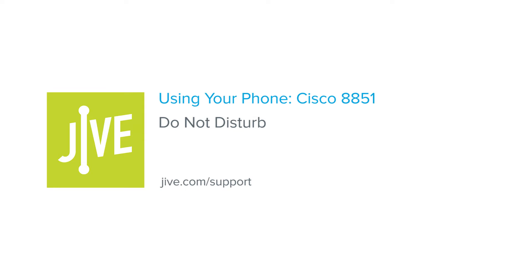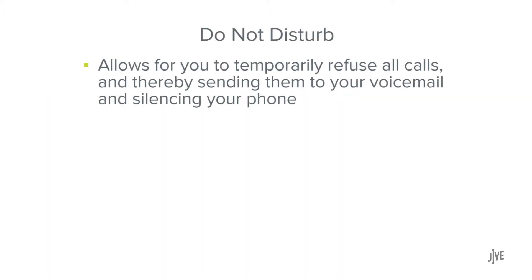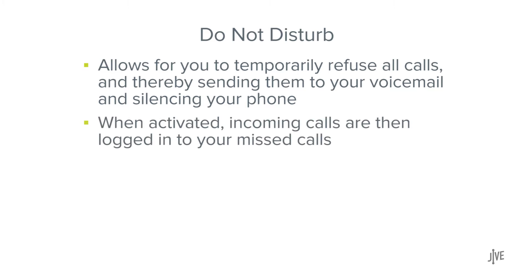In this video, you will learn how to enable and disable the Do Not Disturb feature on a Cisco 8851 phone. Do Not Disturb allows you to temporarily refuse all calls, sending them to your voicemail and silencing your phone. When activated, incoming calls are logged in your missed calls.